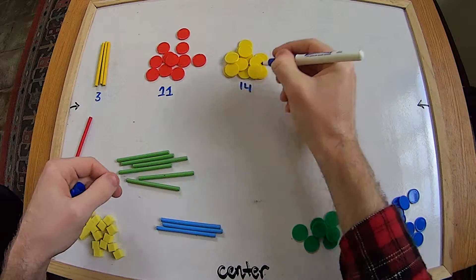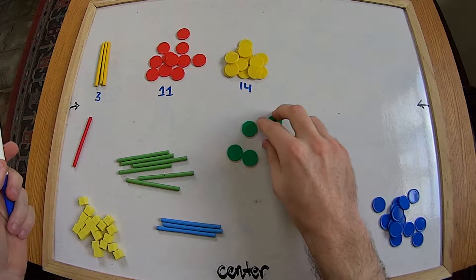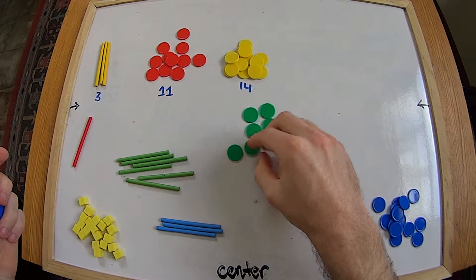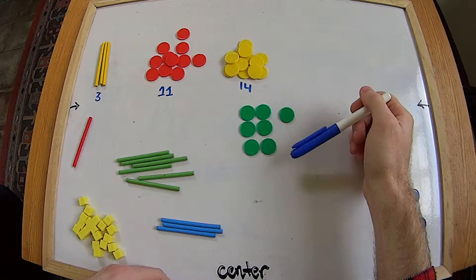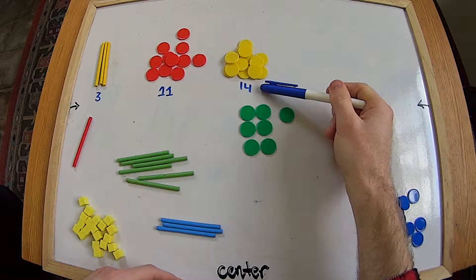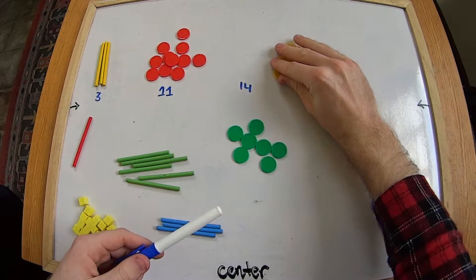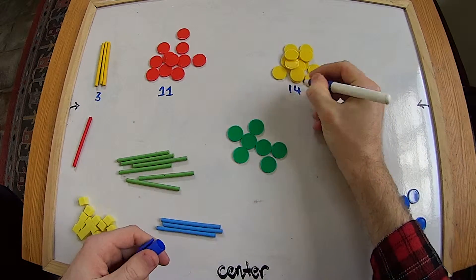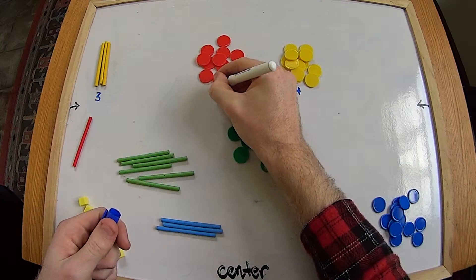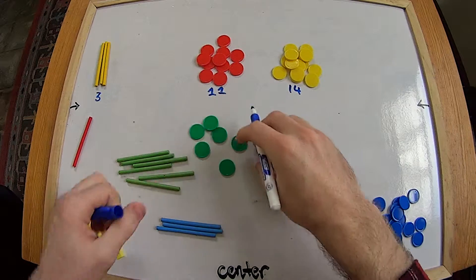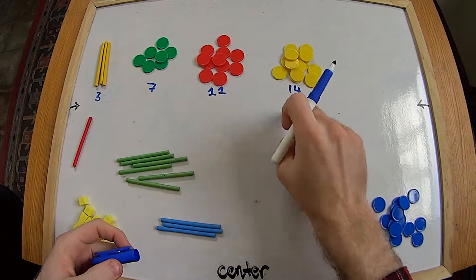Next we've got our green counters. Let's spread them out and count: one, two, three, four, five, six, seven. Is seven less than fourteen? Yes, it's less than fourteen, it's less than eleven, but it's more than three. So we'll move the fourteen yellow counters over, write down eleven so we don't forget, move the eleven red counters over, and slot our seven green counters in there. Now we've got three, seven, eleven, fourteen - all in the right order.